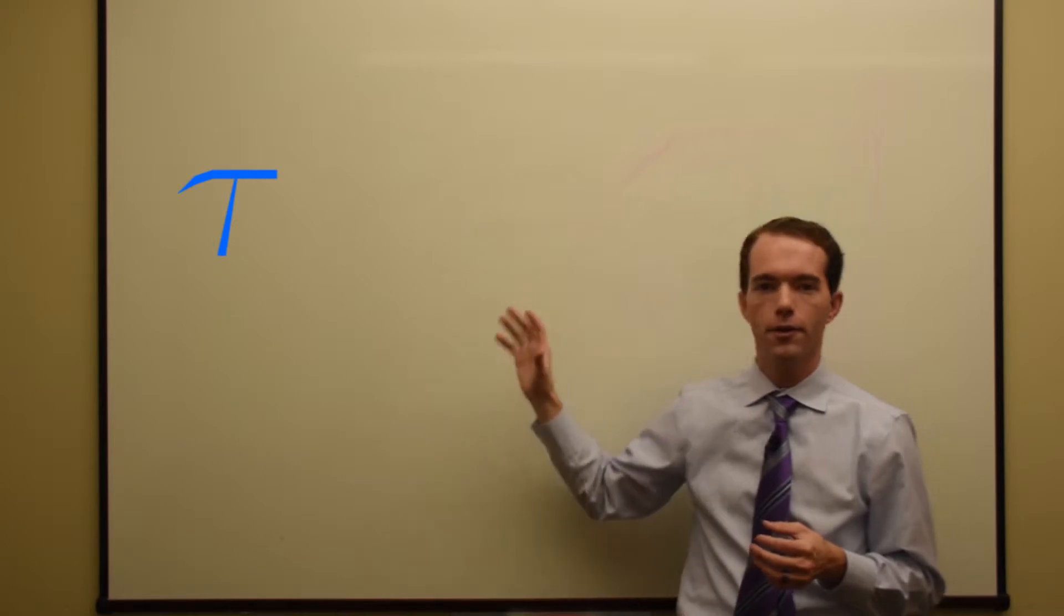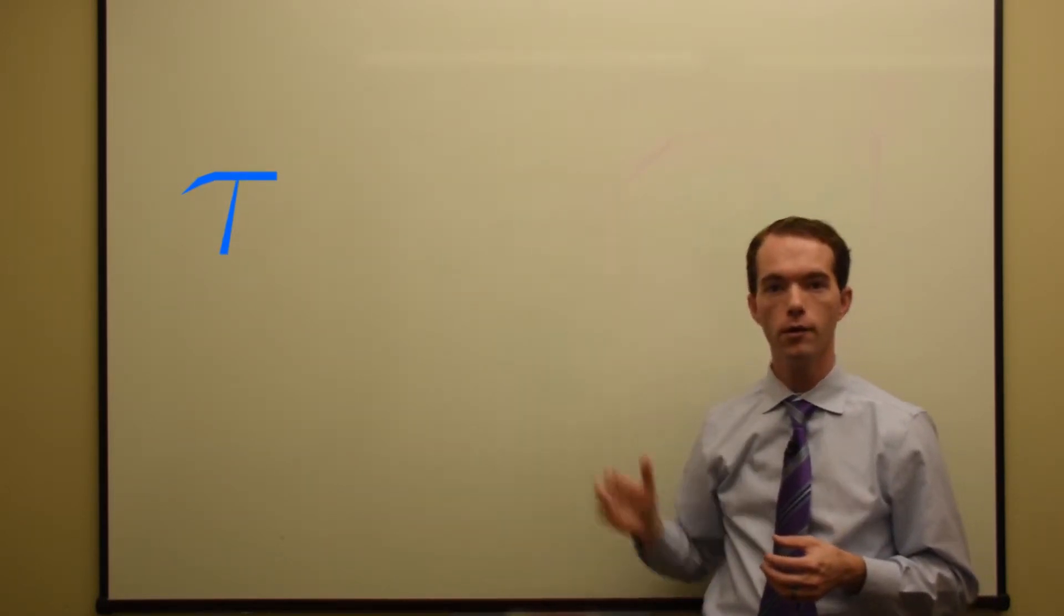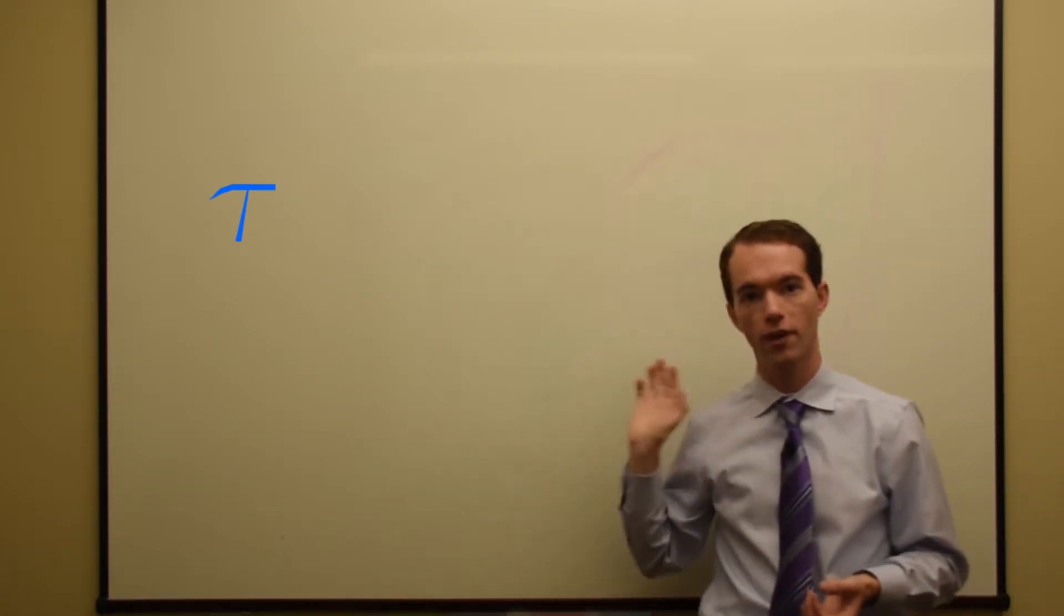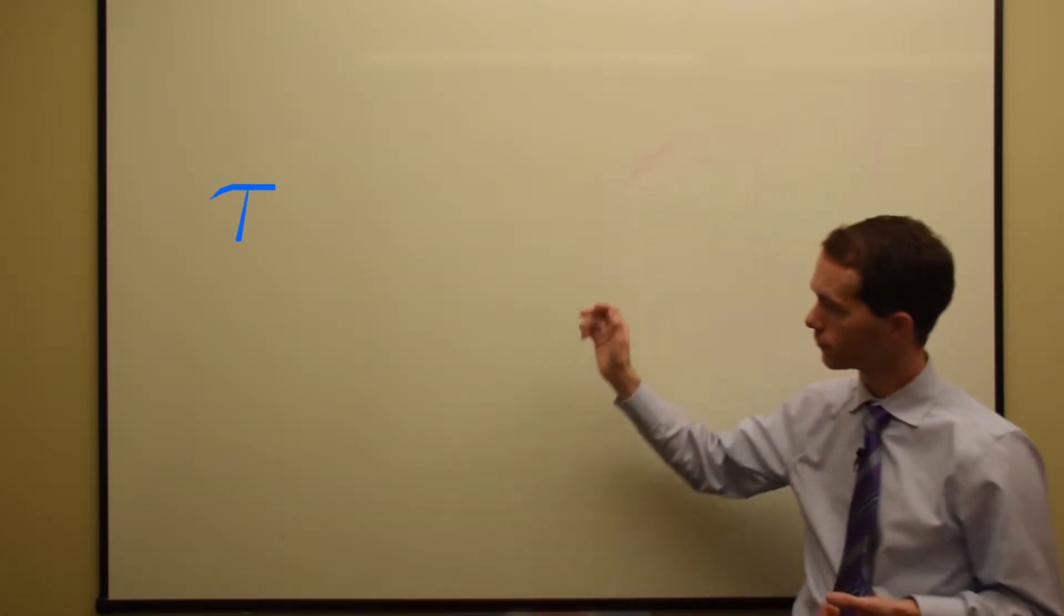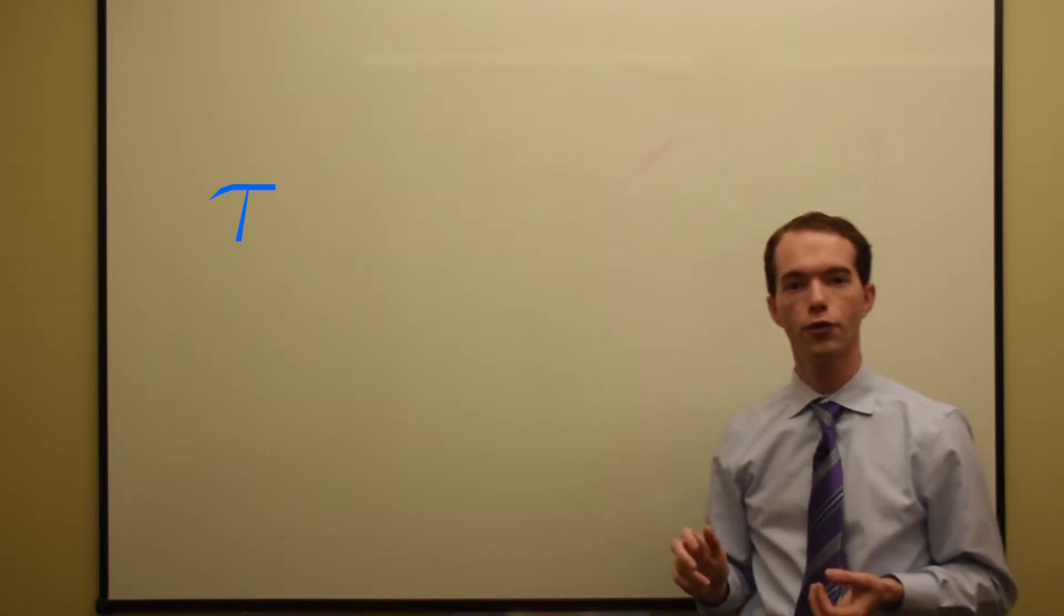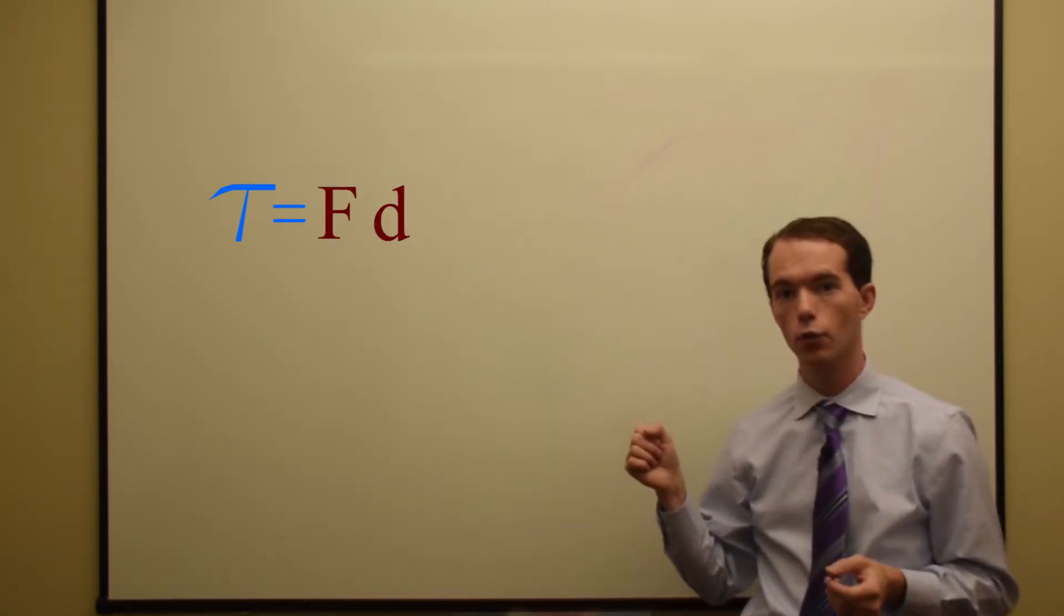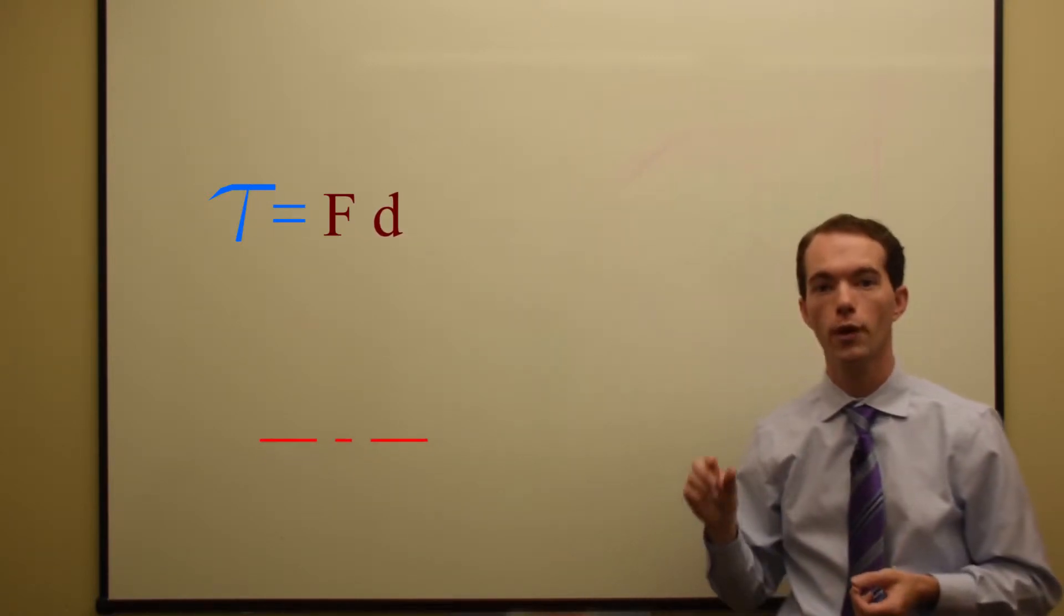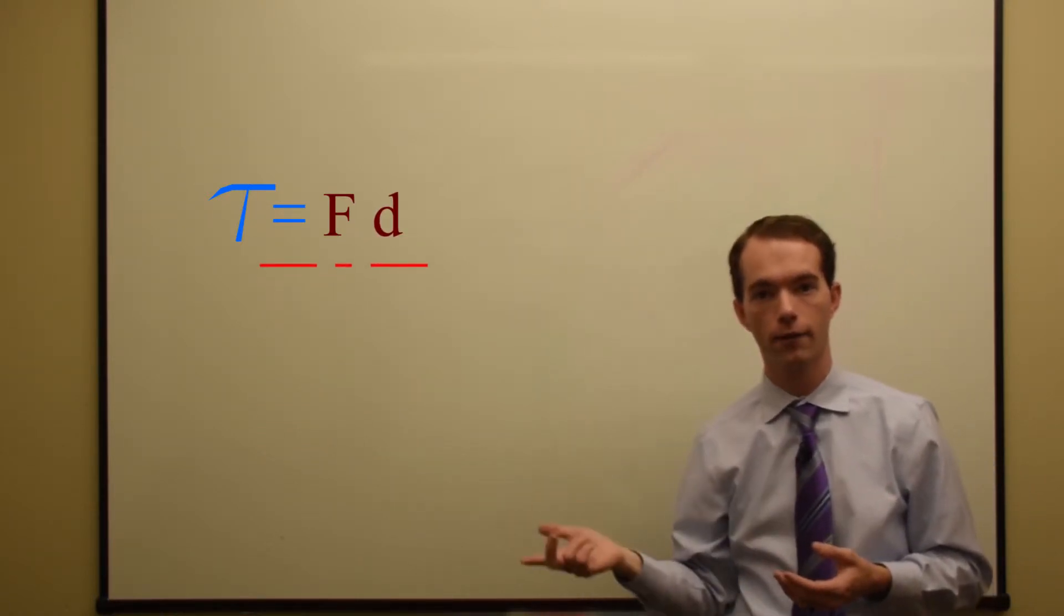A second method that you can use to stabilize your camera is to reduce the torque. Torque is the twisting force instead of a linear force. To reduce the torque, which is a force times the distance, you can either reduce your force that you apply, or you can reduce the distance between where that force is applied and the axis of rotation.